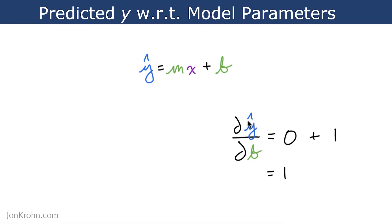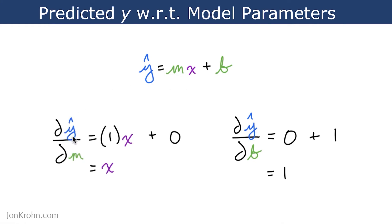Now we also need del y-hat del m. In this case, we treat x and b as constants when differentiating with respect to m. The term with only b in it becomes 0 by the constant rule. In the term with m and x, we treat x as a constant while we differentiate m. Just like b, m is really m to the power of 1, so by the power rule it becomes m to the power of 0 times 1, which equals 1. Then by the constant multiple rule, we bring x back into the picture. So we have 1 times x plus 0, which simplifies to just x.